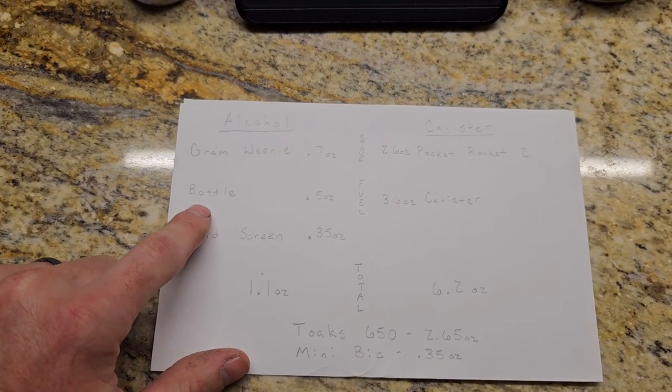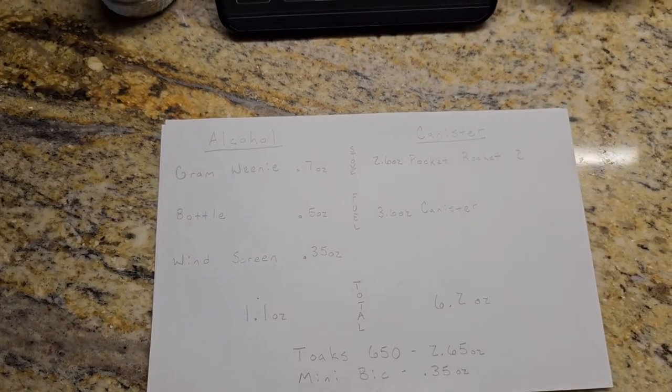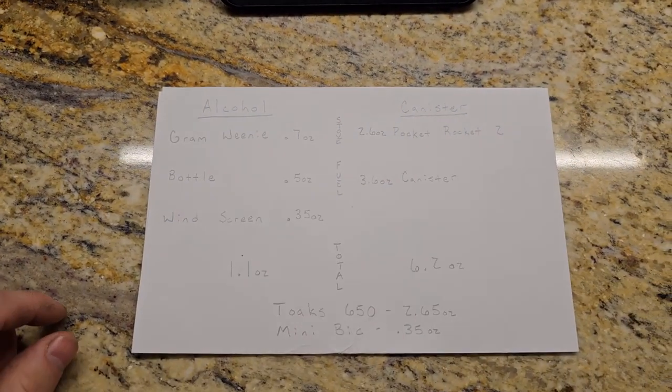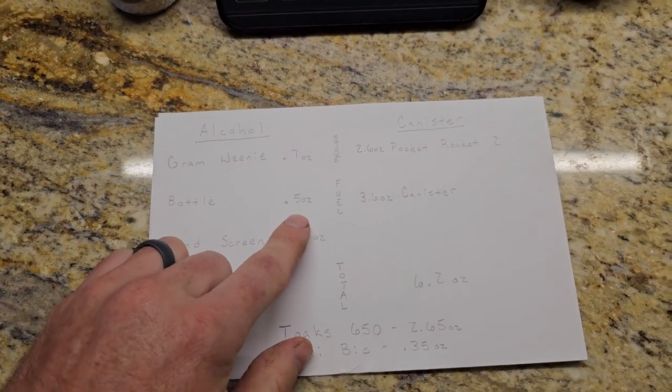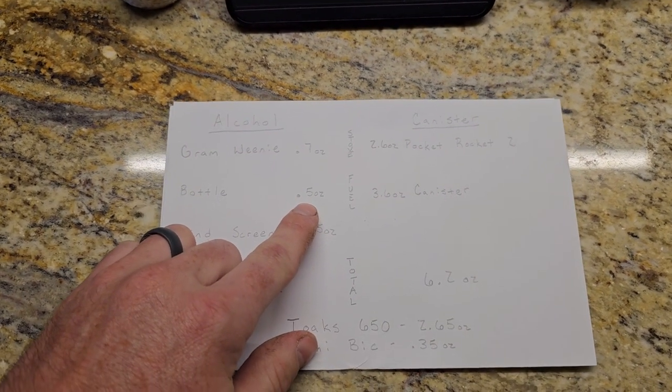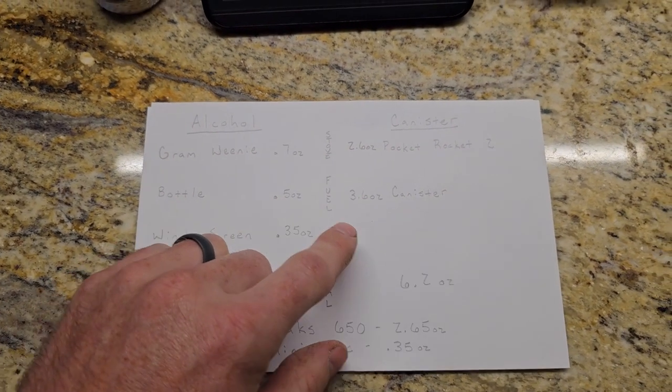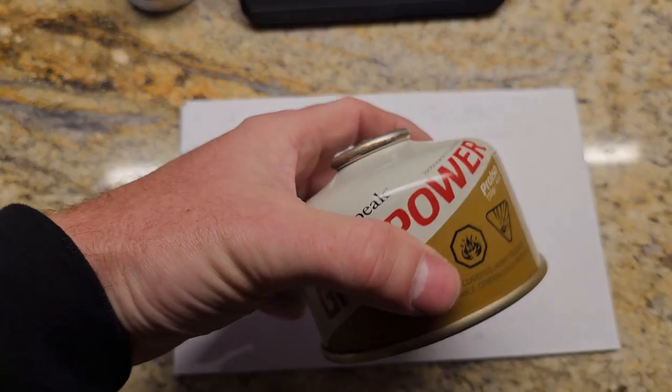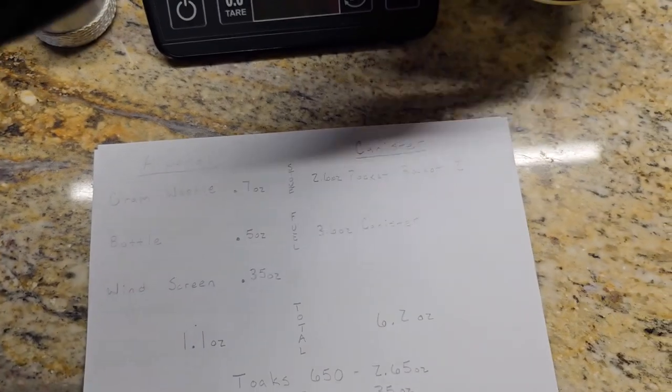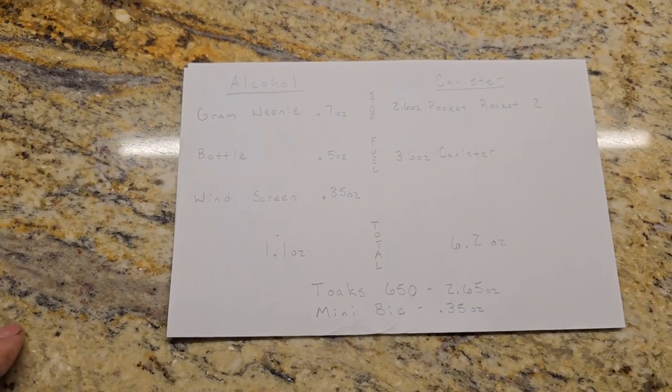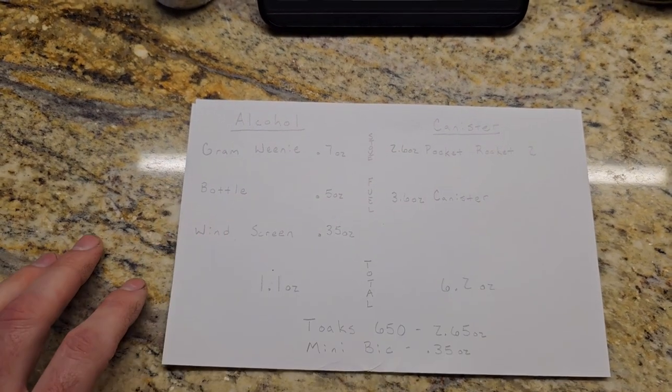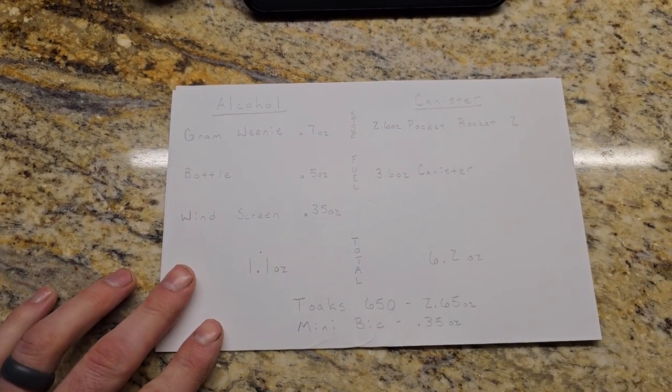Next down is my fuel container. For this bottle right here that I will keep my alcohol in, that bottle only weighs 0.5 ounces, super lightweight, whereas the raw fuel canister with no fuel in it, just an empty fuel canister, weighs in at 3.6 ounces. Another huge savings there.